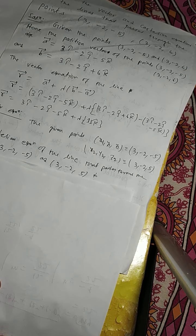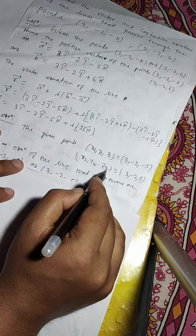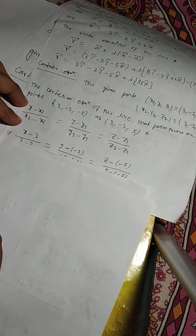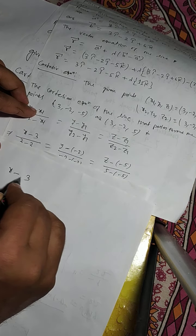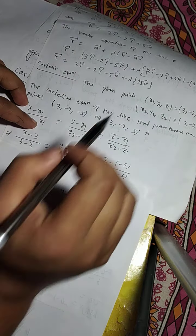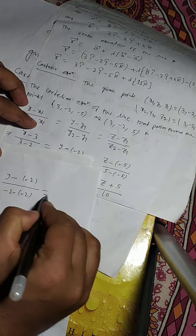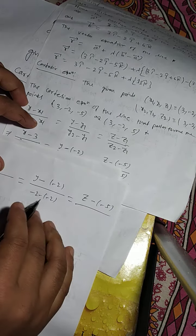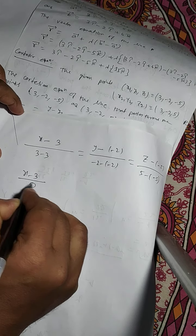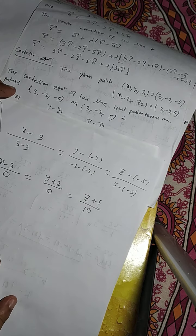Now the Cartesian equation. Here the given points are x1, y1, z1 equals 3, minus 2, minus 5 and x2, y2, z2 equals 3, minus 2, 6. Using the formula (x minus x1) by (x2 minus x1), we get (x minus 3) by (3 minus 3) equals to (y plus 2) by (minus 2 minus (minus 2)) equals to (z plus 5) by (6 minus (minus 5)), which gives (x minus 3) by 0 equals to (y plus 2) by 0 equals to (z plus 5) by 10, which is the answer.